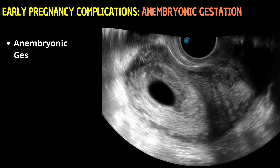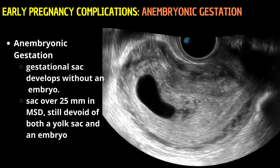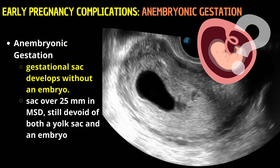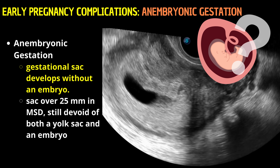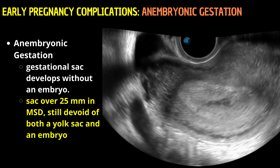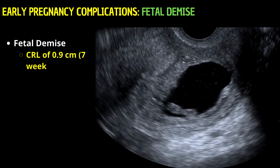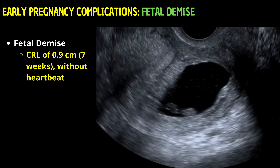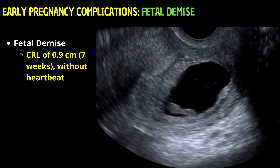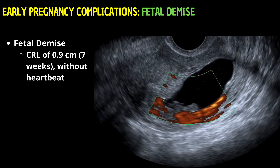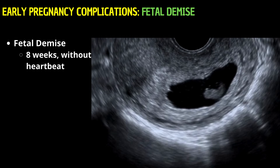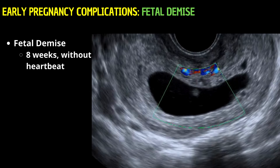In early pregnancy assessments, we sometimes detect the absence of crucial developmental milestones, such as in an anembryonic gestation or blighted ovum. This condition is characterized by the development of a gestational sac without an embryo, identified when a follow-up ultrasound displays a sac exceeding 25 mm in mean sac diameter without a yolk sac or embryo, indicating early pregnancy loss. We might also observe an embryo with a crown-rump length of 0.9 cm, corresponding to approximately 7 weeks of gestation, yet missing the vital heartbeat, signaling fetal demise. Color Doppler is utilized to confirm the absence of cardiac activity by detecting the direction of blood flow. Similarly, the absence of heartbeats in an 8-week gestation embryo underscores color Doppler's role in confirming such findings.